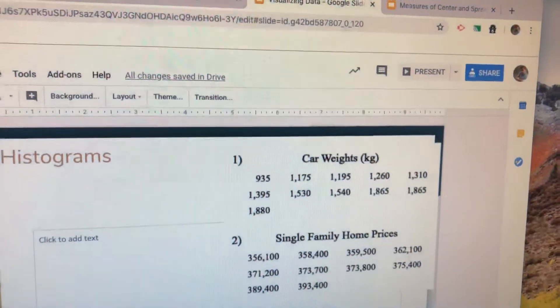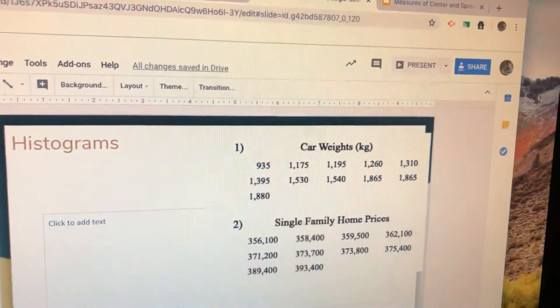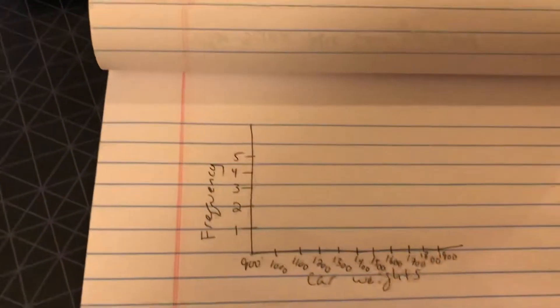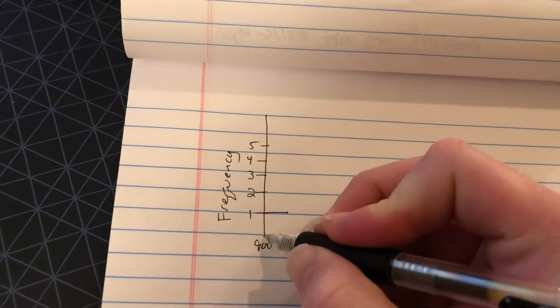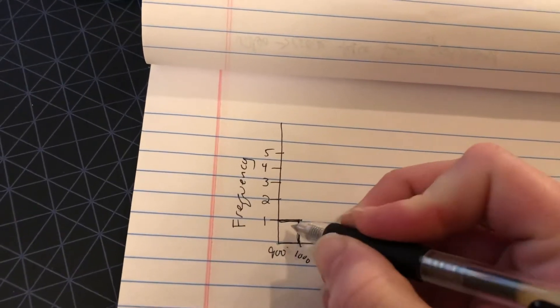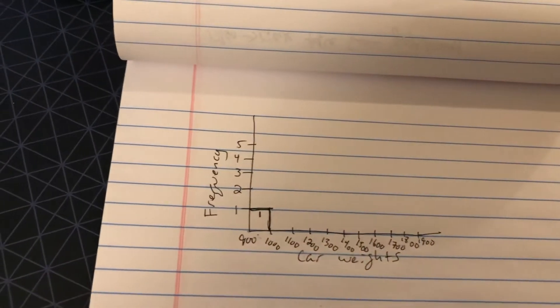If you look at my data, I only see the one car between 900 and 1,000. So I'm going to come up here, and that first bar is going to go from 900 to 1,000, and it's going to go up to 1. And I'm going to put a little 1 in there, so I know there's only one car.